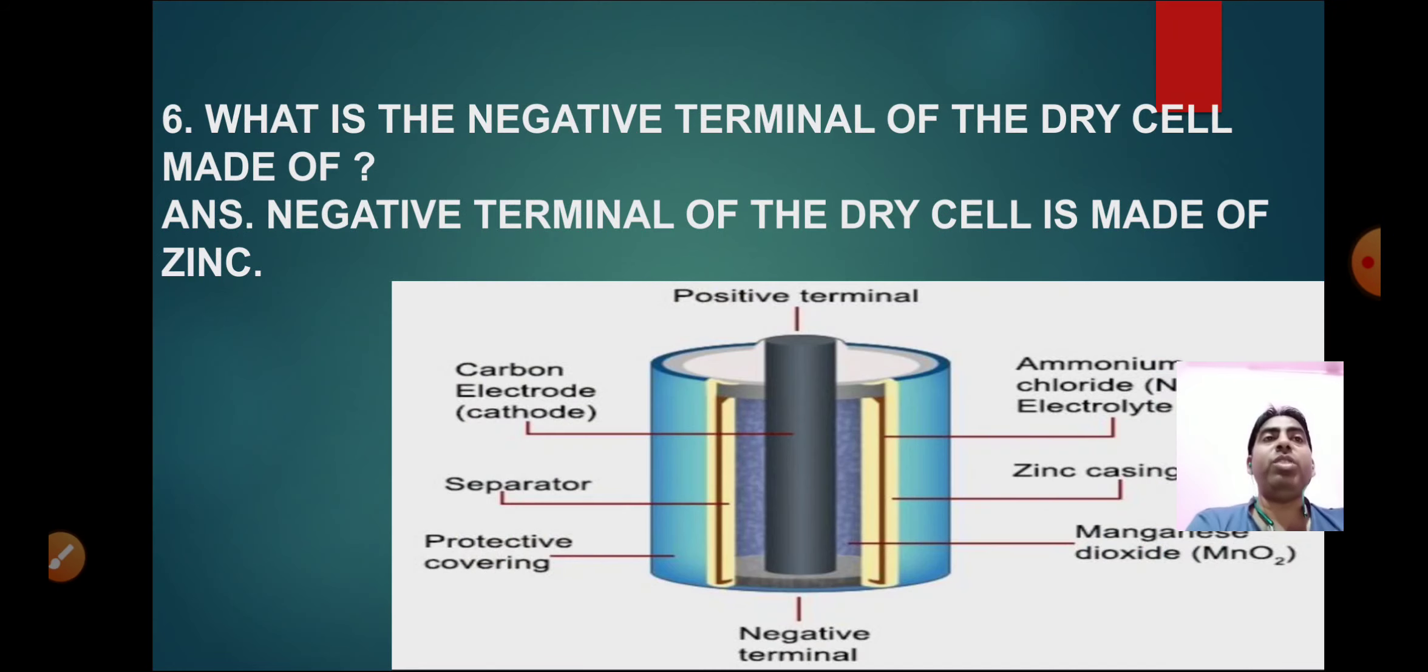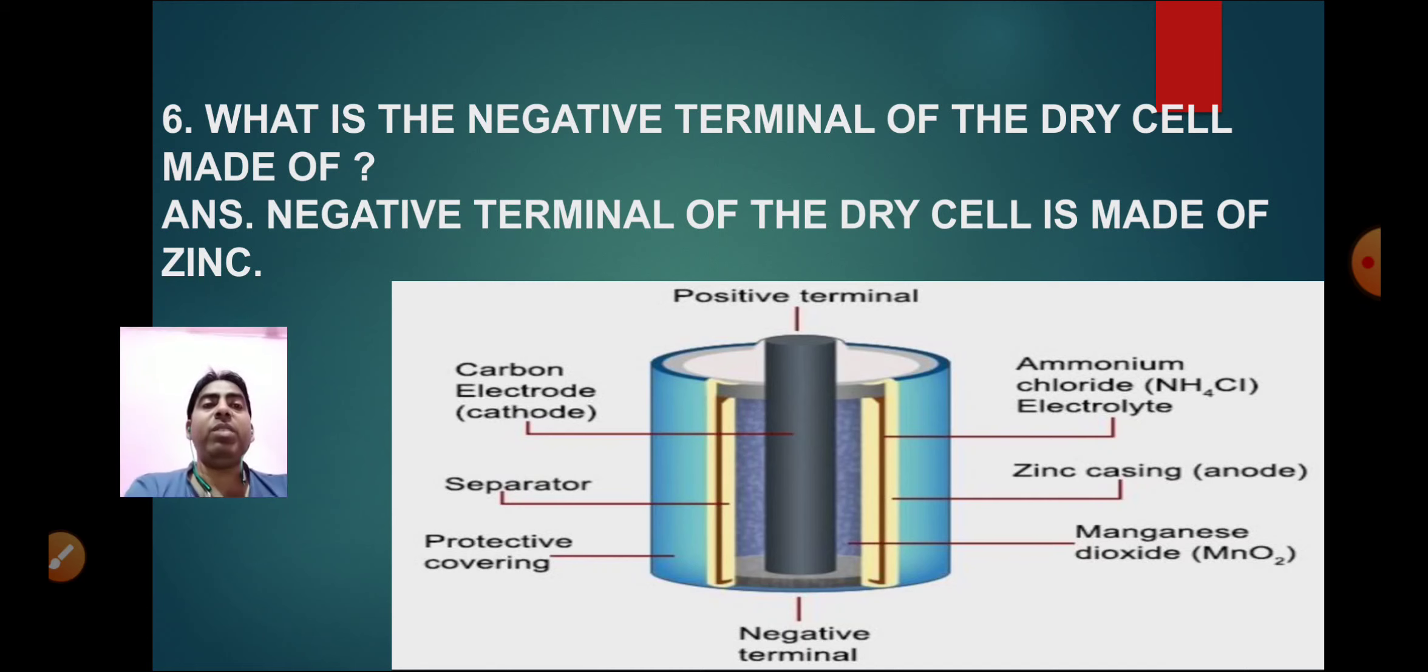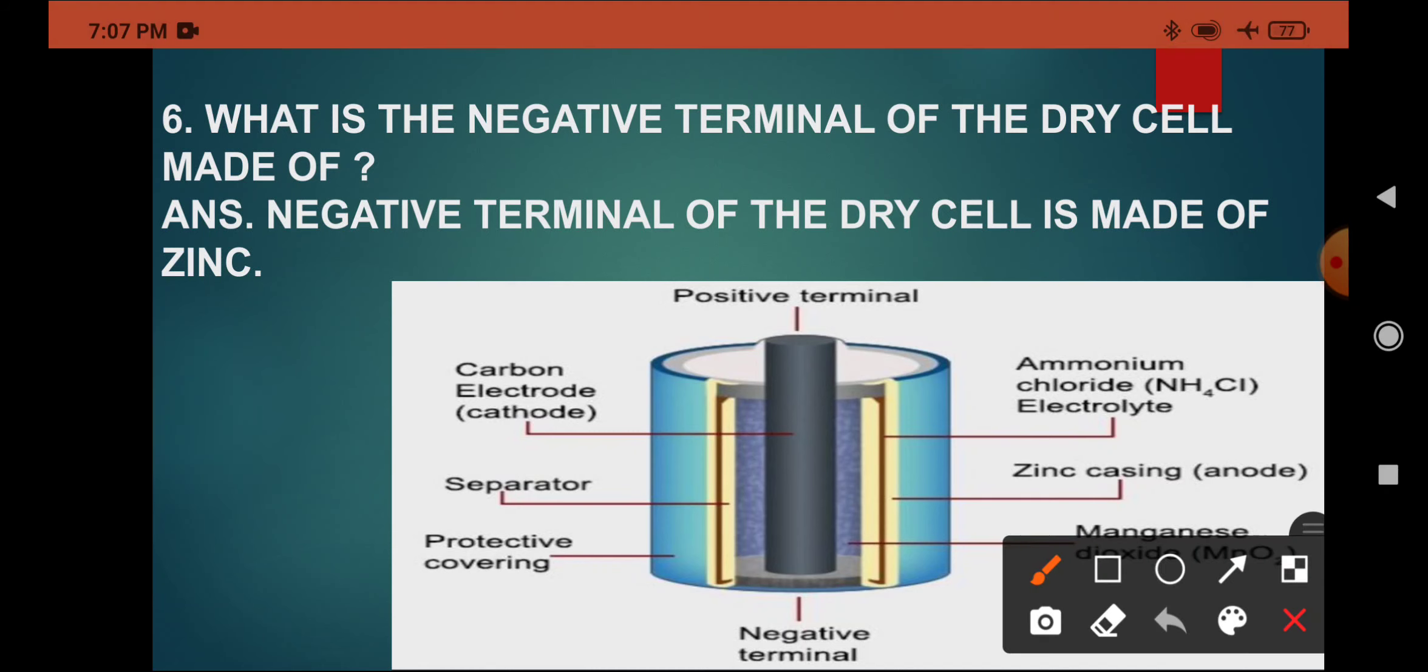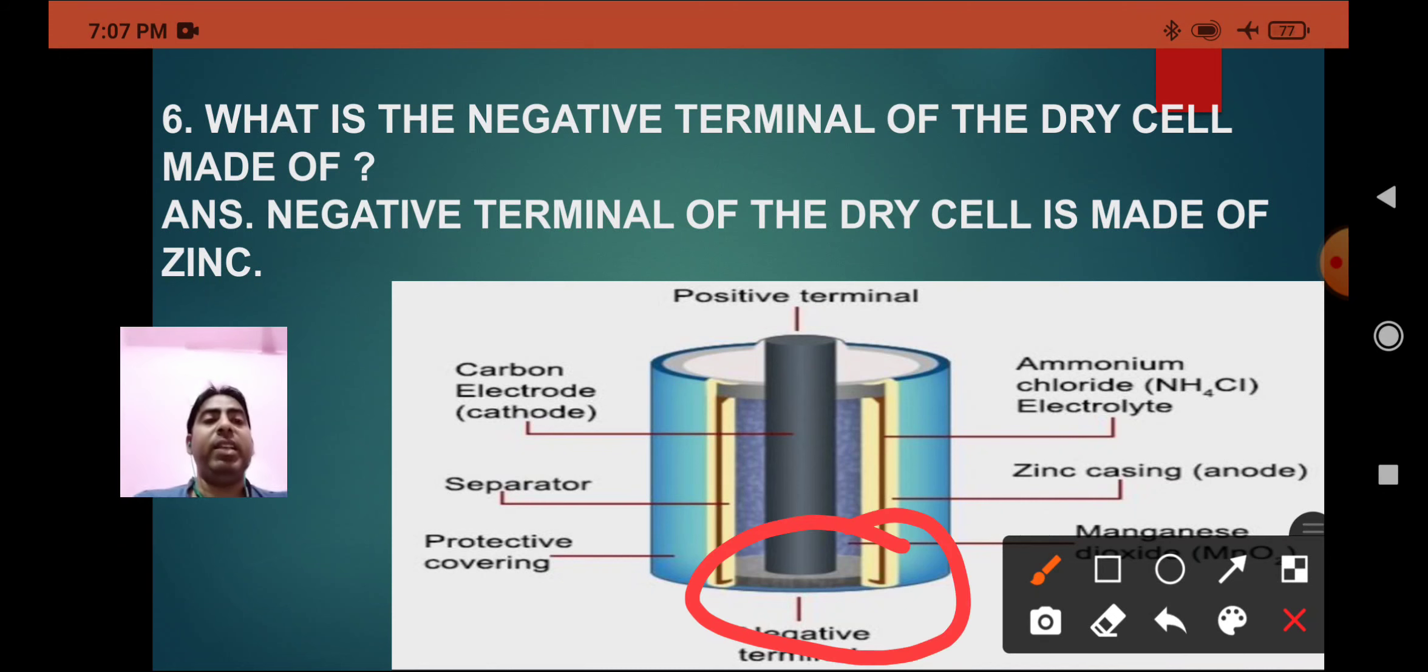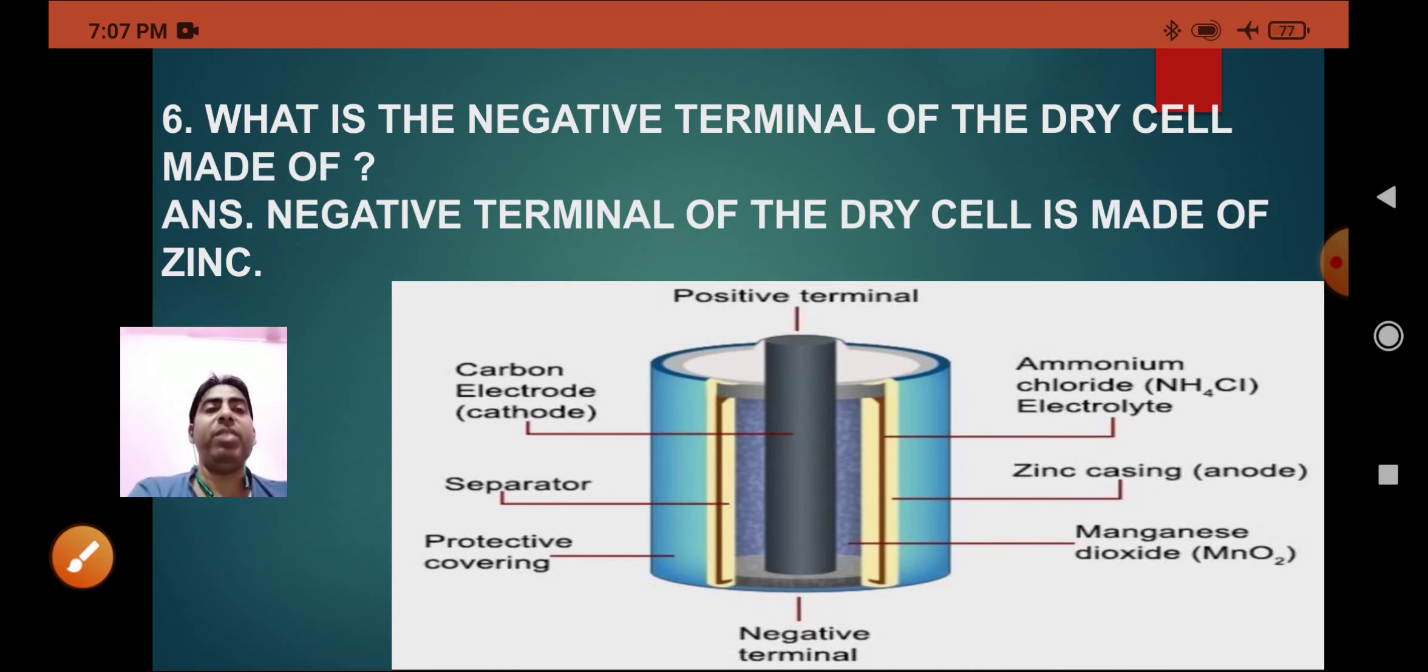Moving towards question number six: What is the negative terminal of the cell made of? The negative terminal of the dry cell is made up of zinc. This side is the negative terminal, this is the positive terminal. This is the zinc coating, this is the negative terminal.